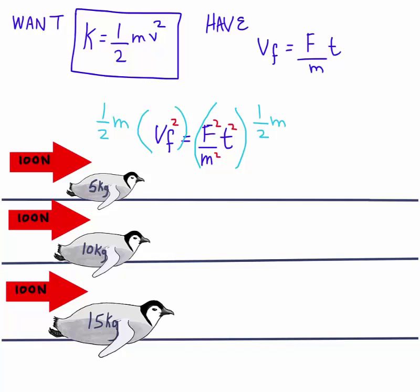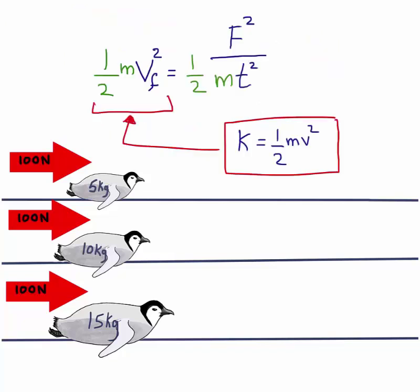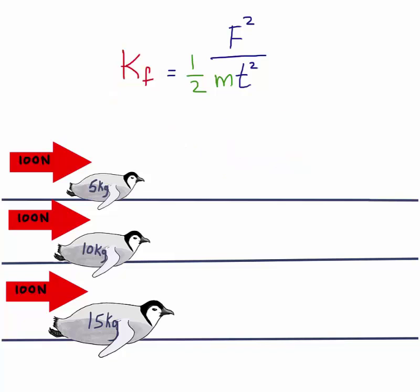The purpose for doing this was to obtain an expression for kinetic energy that uses force, time, and mass, which are the variables available to us as of now. Because we have half Mv squared on the other side, we can say that this is kinetic energy. Given this new equation, which penguin will have the largest kinetic energy?